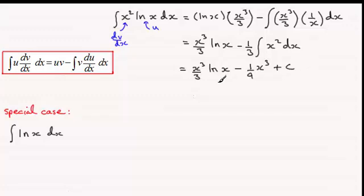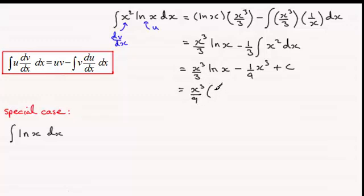So that's essentially it. But because we've got fractions in both terms, we might as well pull out a lowest common multiple of 3 and 9, which is going to be 1 ninth. We've also got a common factor of x cubed, so it would look good if we pull out x cubed over 9. For the first term, we times the 3 by 3 to get 9, so you get 3 times the natural log of x. And for the last term, that's just going to be minus 1, and then plus c.